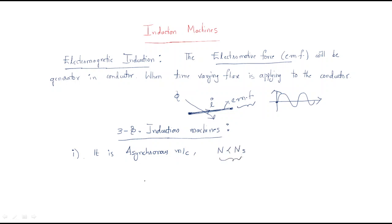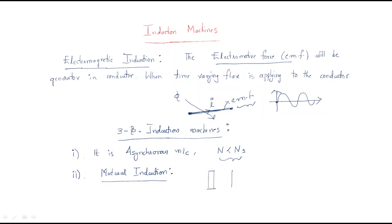Asynchronous machine means it does not have a constant speed — the speed is less than synchronous speed. This is the first characteristic. It also works on electromagnetic induction, which we can also name as mutual induction.